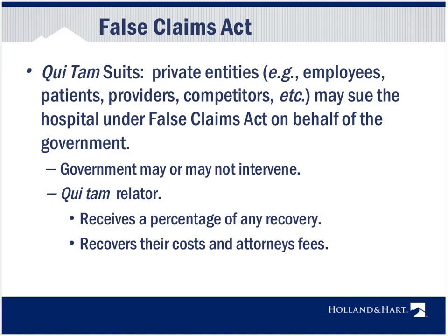What are the penalties for a false claim? At the very least, you have to repay the government plus interest. In addition, you can be hit with civil monetary penalties of $5,500 to $11,000 per claim — not per plan or program, but per claim submitted. Those penalties can add up quickly. You can also face treble damages and be excluded from the Medicare or Medicaid program, which is effectively the death knell for any significant health care provider.